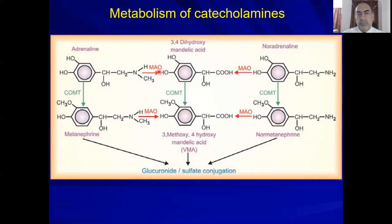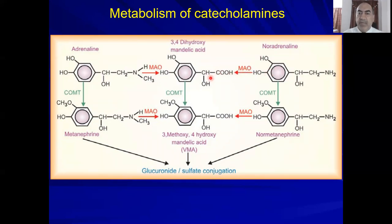Let's start with noradrenaline. Adrenaline does not have a methyl group — the prefix 'nor' means demethylated. So noradrenaline is a copy of adrenaline except for the absence of the methyl group. Under the effect of MAO, noradrenaline undergoes oxidative deamination: the NH2 group is removed and the CH2 is converted into a carboxyl group. This product is called 3,4-dihydroxymandelic acid.